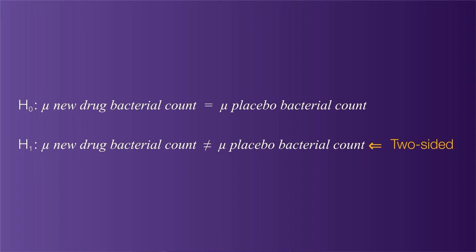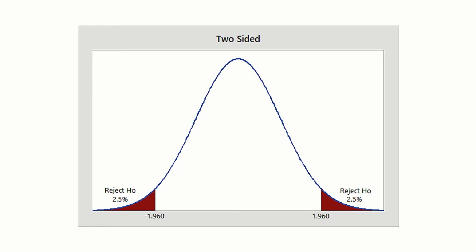With the two-sided test, we reject the null hypothesis when we see an extreme result in either tail of the distribution. So there is a 2.5% chance of rejecting by random chance in each tail.